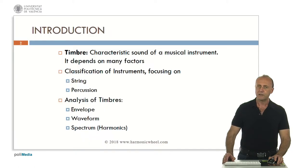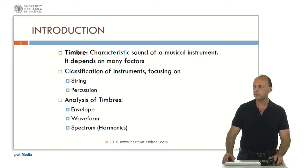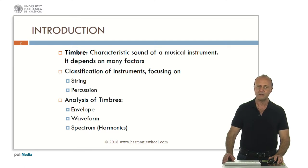The timbre is the characteristic sound of a musical instrument and it depends on many factors. From the classification of instruments, we will focus on string and percussion instruments. To analyze the timbres, we will consider the envelope, the waveform, and the spectrum — that is, the harmonic series.